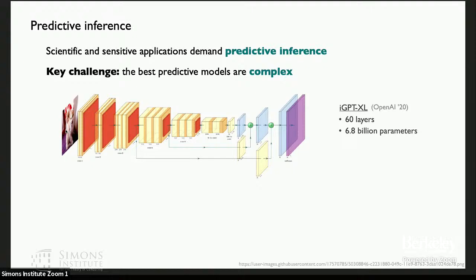So a key challenge here when we're working in this setting is that these predictive models are very complex. If you look at something like a state-of-the-art neural network, it might have hundreds of layers. This image GPT, a transformer model, has 6.8 billion parameters. So these models are really massive. And the question is, how can I work with such an object to get statistical guarantees?